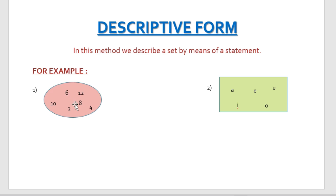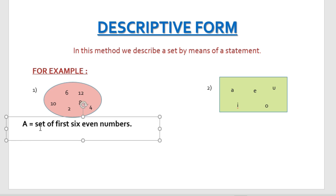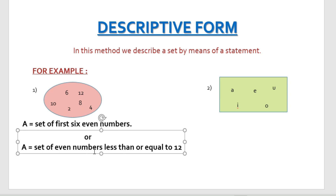The numbers 2, 4, 6, 8, 10, 12 — all these numbers are divisible by 2. So we can express this group of numbers by means of a statement. We can write it as: set A is a set of first six even numbers. We can also write the set as: set of even numbers less than or equal to 12, since the numbers show us the limit till 12. Both statements are accurately defining the set.